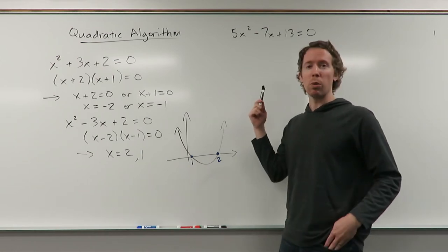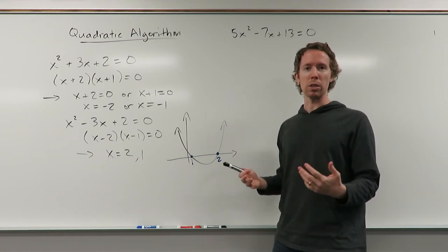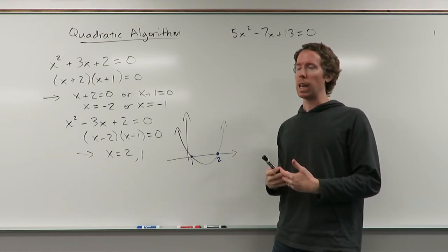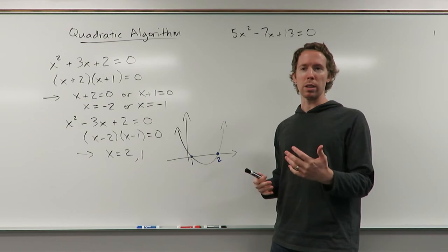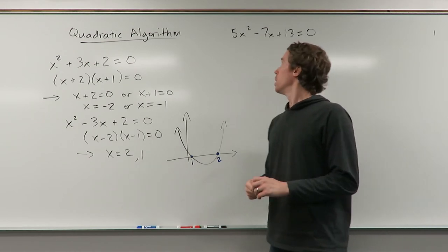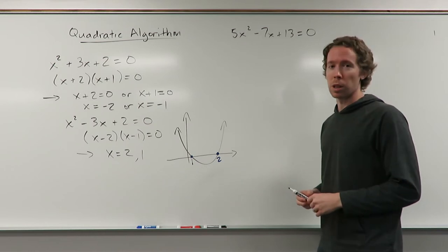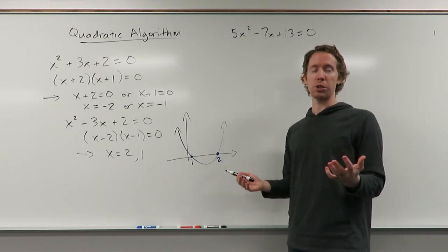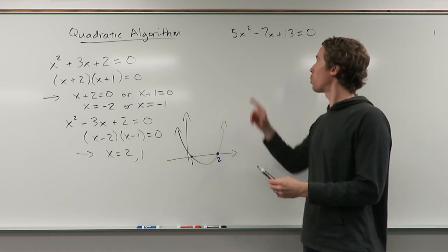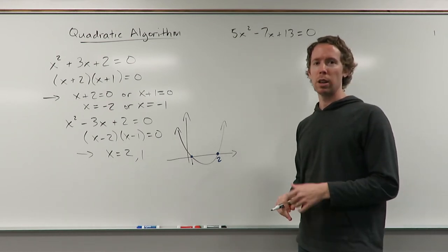To get the quadratic formula, you've got to do completing the square and some other things altogether at the same time, and it's just not easy to understand why things work the way they do. I could teach you to do it, but it's just not very intuitive. So this other way of doing it assumes that we can actually factor this — and it's true, you can factor this. No matter what these numbers are, you can always factor.